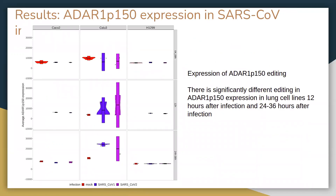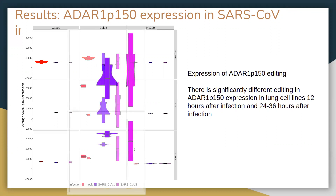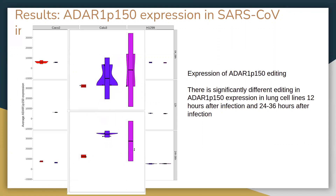Our results show that, indeed, coronaviral infections activate ADARs. Notably, we observe differential expression of ADAR1P150 between the two viruses. We are going to focus on the lung cell line, shown in the middle column, and the 12-hour, shown in the middle row, and 24-hour, shown in the bottom row, post-infection time points. As expected, mock, shown in red, has lower expression than either SARS-CoV-1, shown in blue, or SARS-CoV-2, shown in purple. This is especially pronounced in the 24-hour post-infection time point.